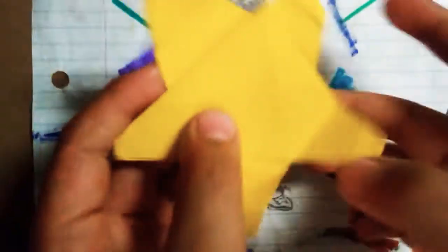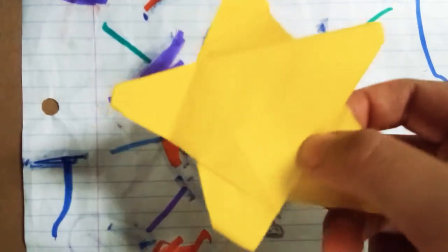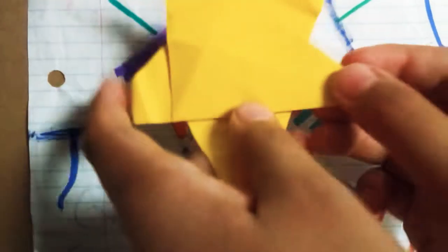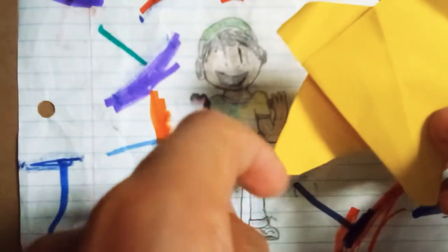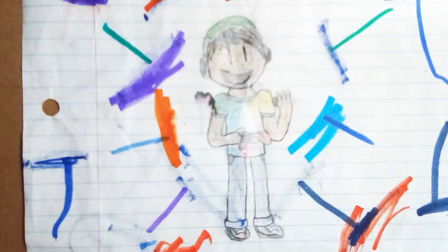This next model I have is an origami Kirby's Warp Star. I showed this model a while ago, and I also did a tutorial on it. I will leave a link down in the description so you guys can fold it. So, here's how it works.